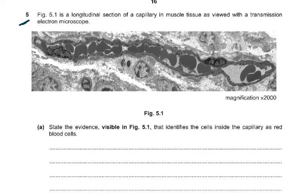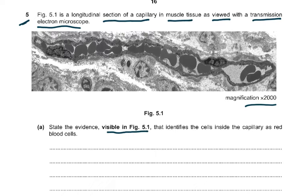Question 5: figure 5.1 is a longitudinal section of a capillary in muscle tissues as viewed with the transmission electron microscope at a magnification of 2000. State the evidence visible in figure 5.1 that identifies the cells inside the capillary as red blood cells. The evidence is: there is no nucleus, no organelles, uniform appearance or homogeneous cytoplasm, some are biconcave in shape, and they are the same width and size as the lumen of the capillary.